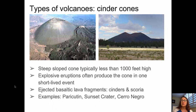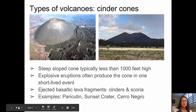Cinder cones are the smallest of the three types of volcanic structures. They are steep-sloped cones with a typical height of less than about 1,000 feet, and they form from typically one short-lived explosive eruption where basaltic lava fragments — including cinders and scoria — are ejected. Good examples of cinder cones include Paracutin in Mexico and Sunset Crater in Arizona.